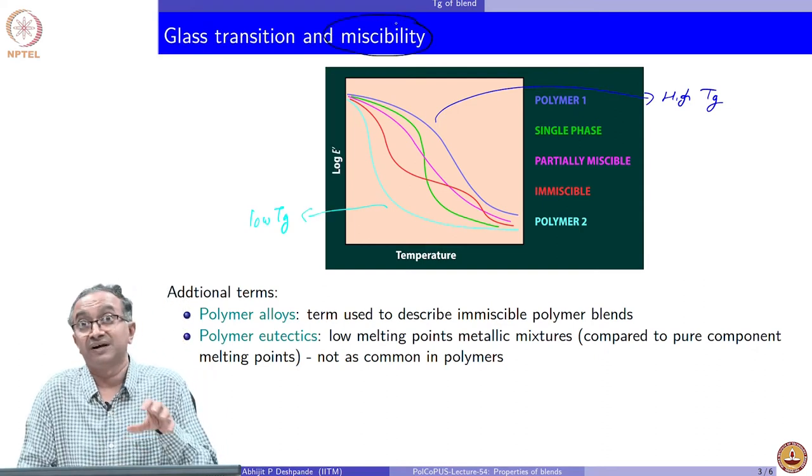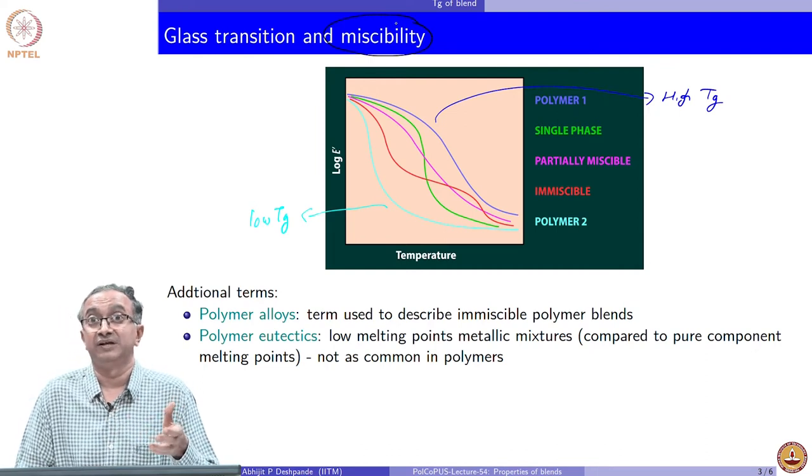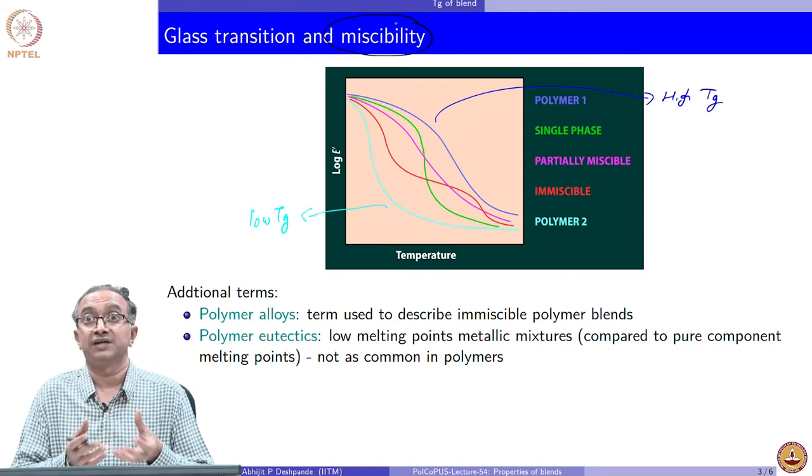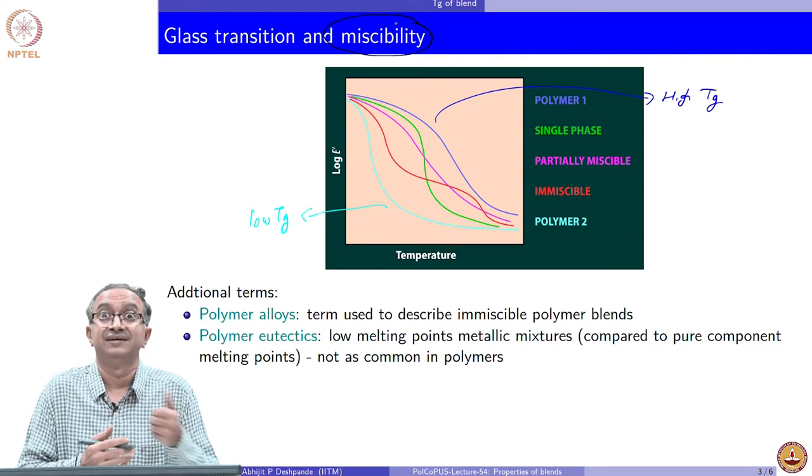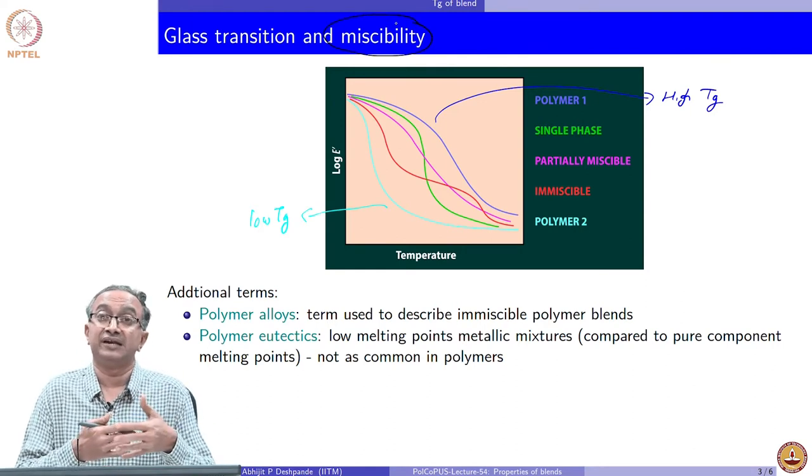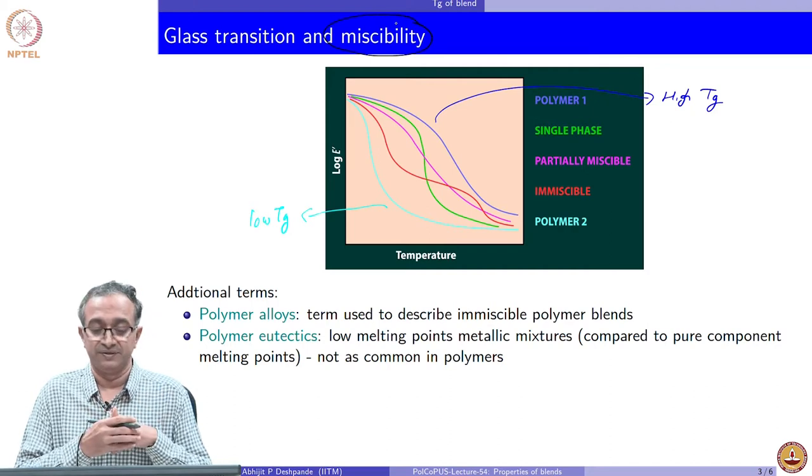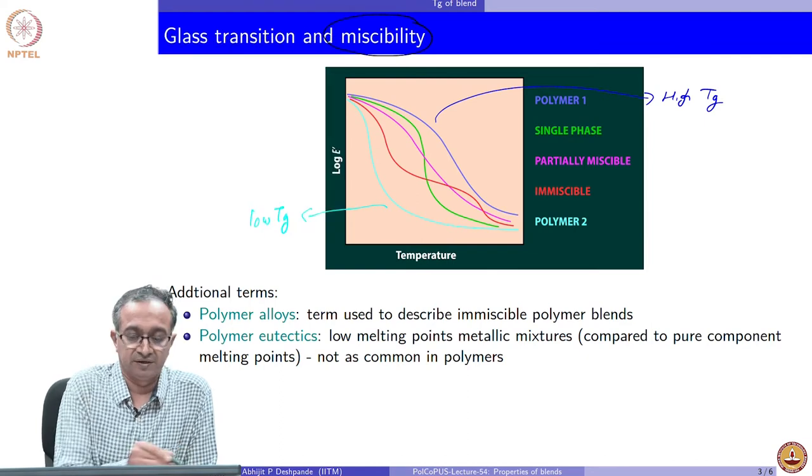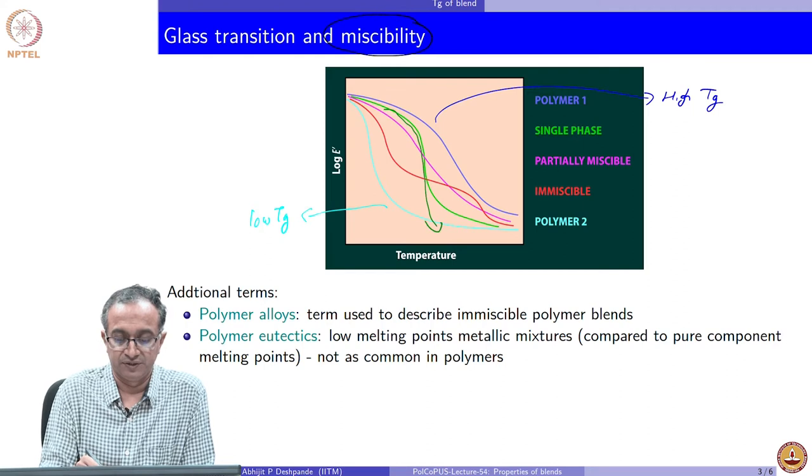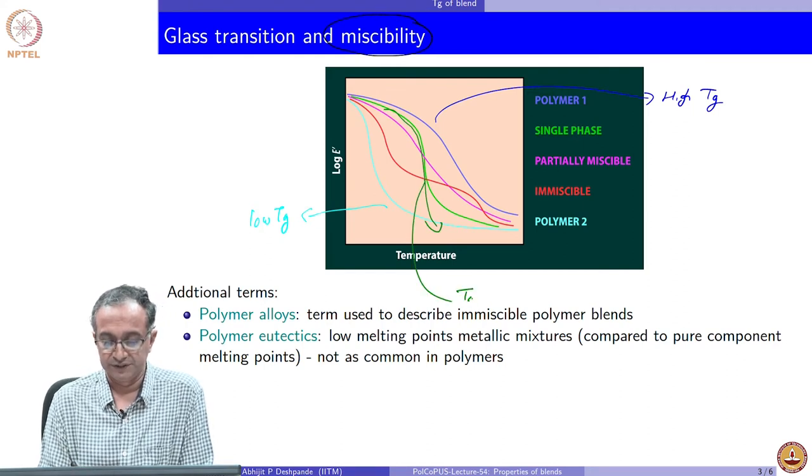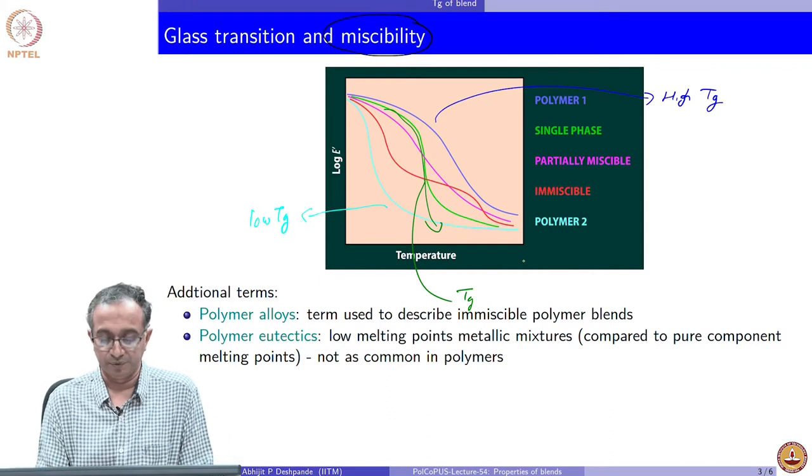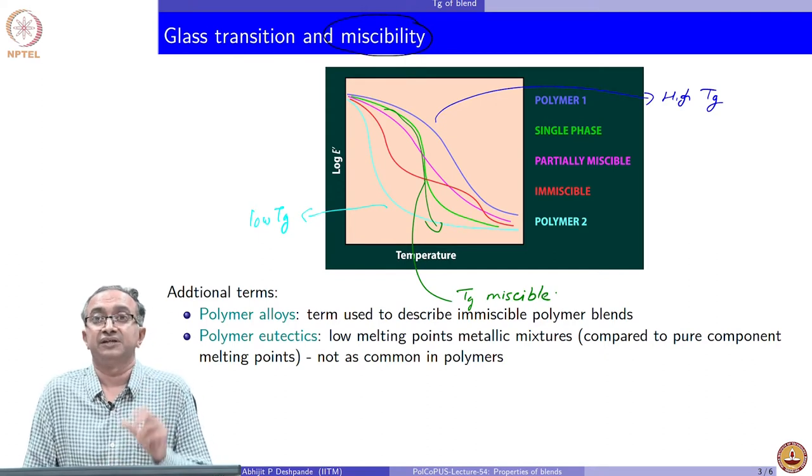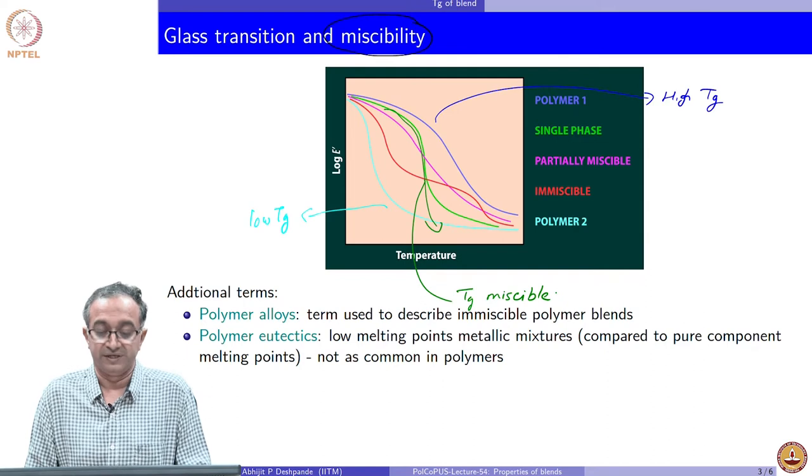If we recall that glass transition is associated with segmental mobility, segmental flexibility, if they are molecularly mixed, then segmental mobility of one macromolecule affects the segmental mobility of other molecule because they are molecularly interacting and exchanging interactions. In that case, we get the single change and the glass transition will be somewhere in between. This is the Tg which is in between the Tg of the pure polymers, but it is miscible. If we observe a single glass transition, that is a good indication of miscibility of the polymeric blend system.